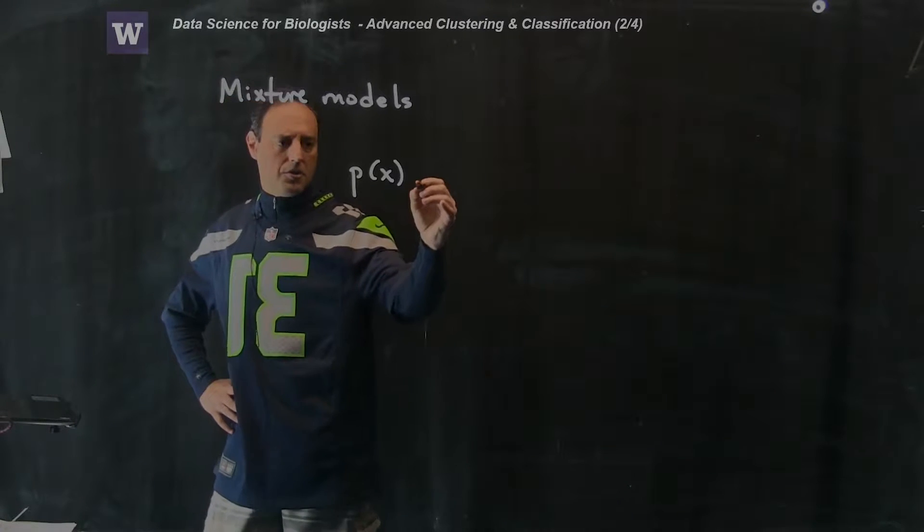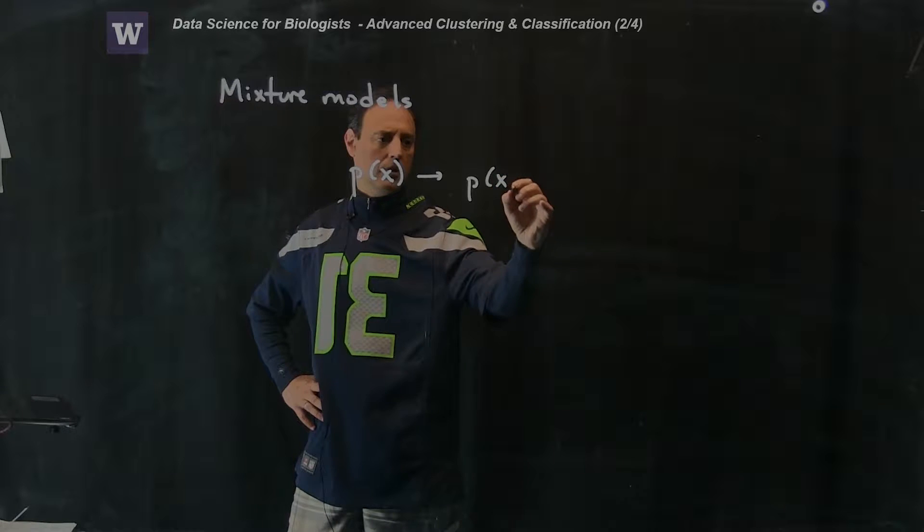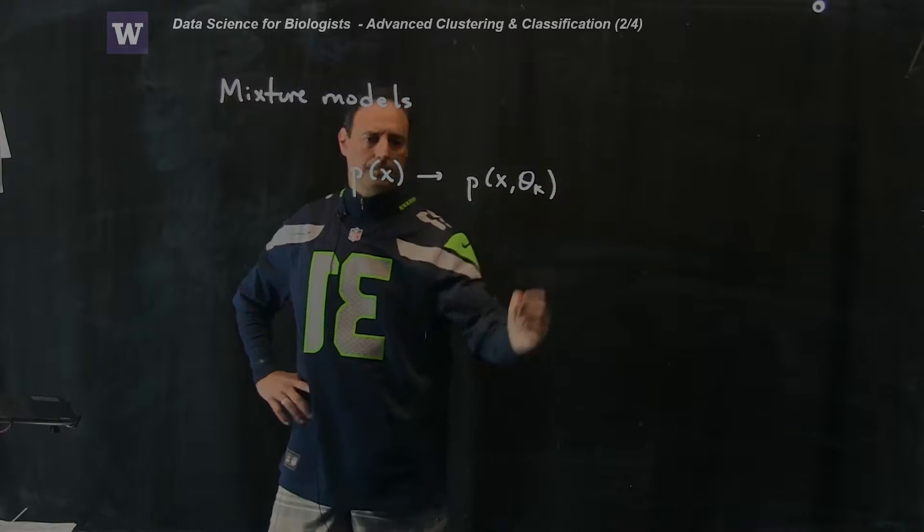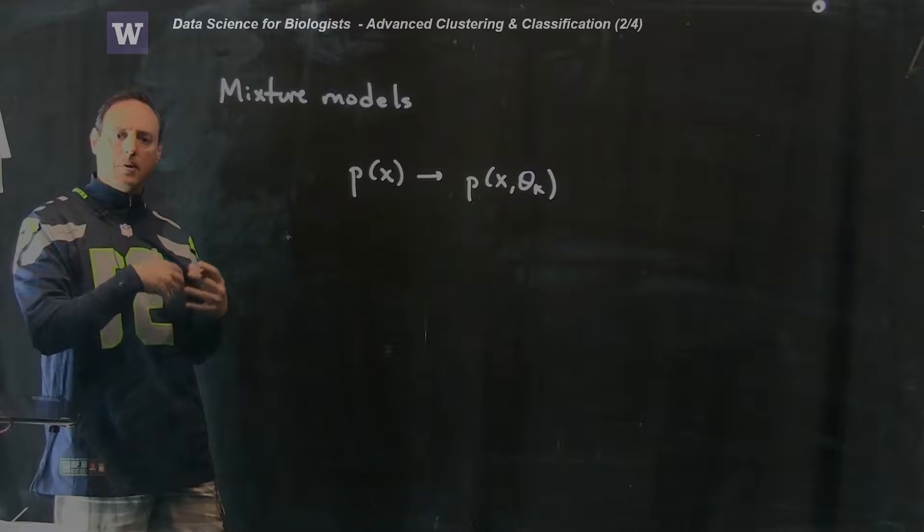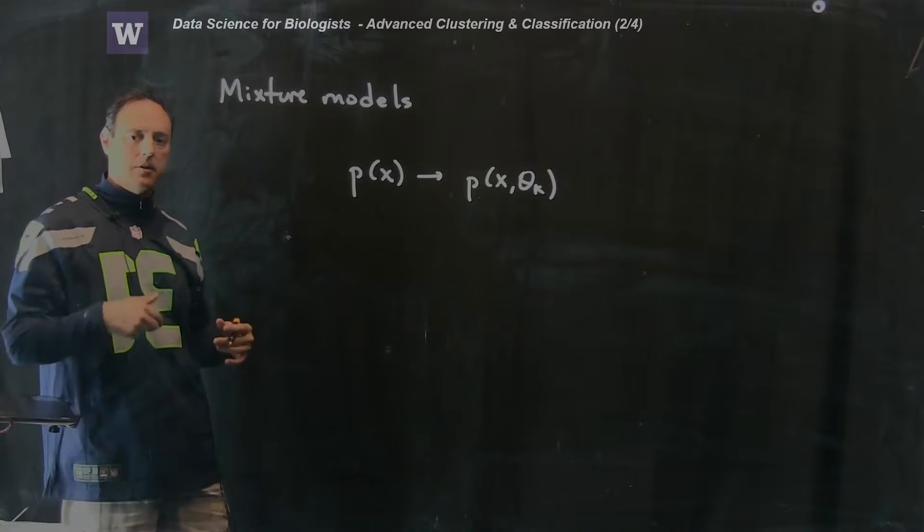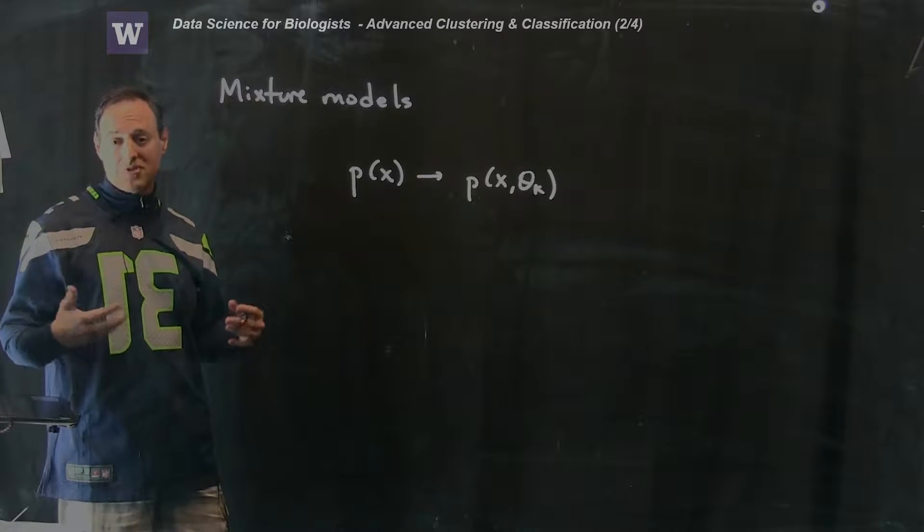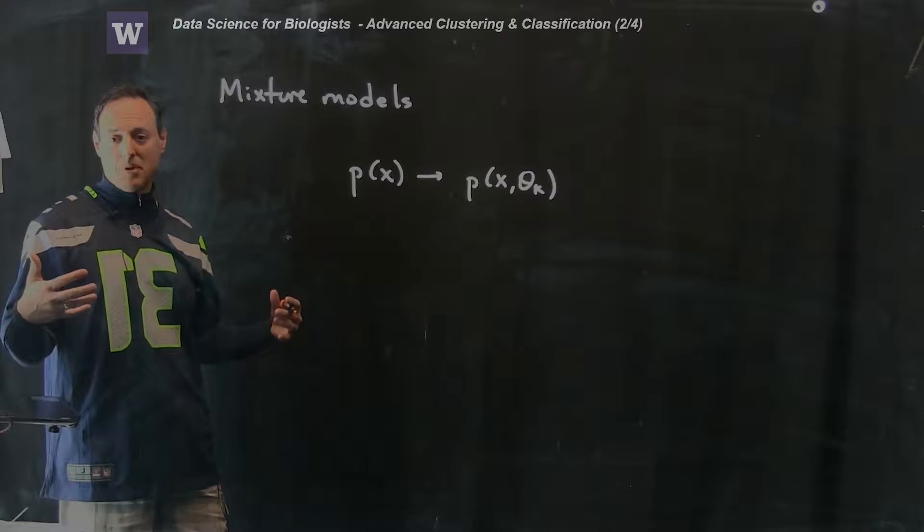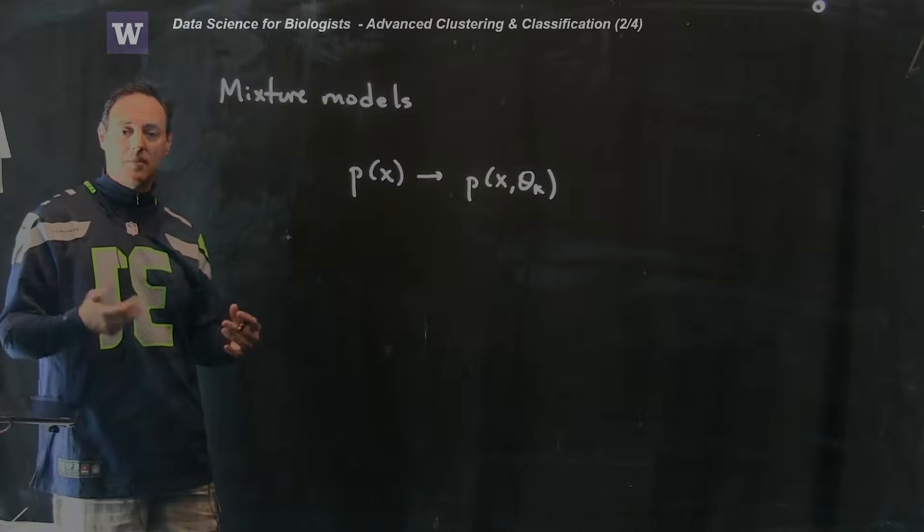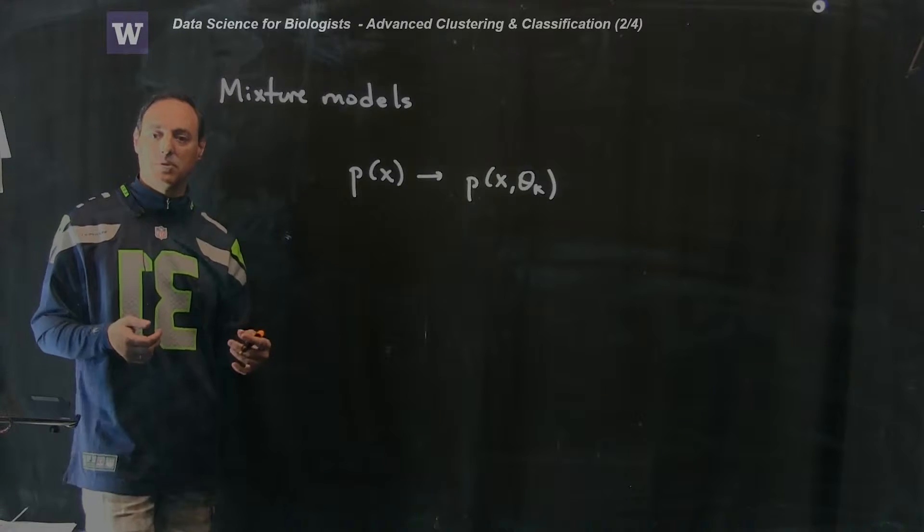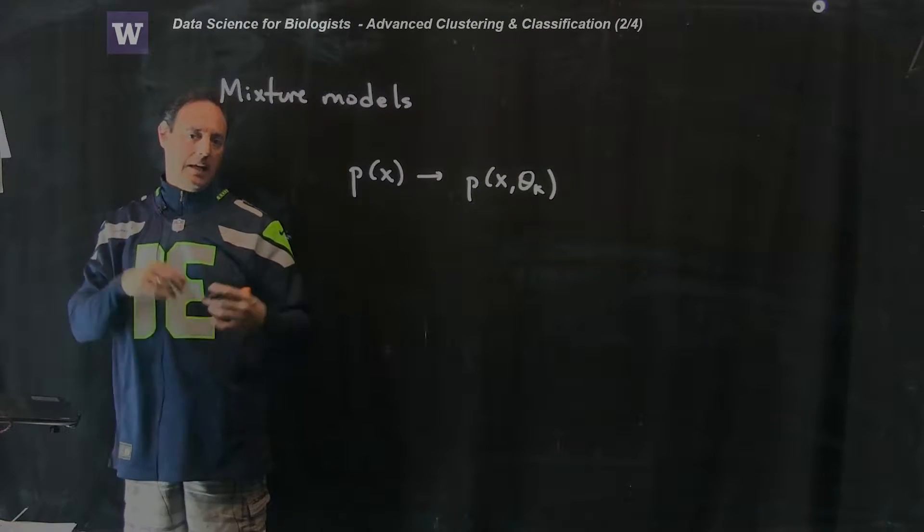Oftentimes, this distribution is parameterized by some parameters, let's say theta k. So in other words, the theta k might have things like, okay, I want to parameterize the mean, the variance, things of this issue. In fact, one of the most standard distributions people assume, if there's nothing better to give you a better guess, is to do Gaussian distributions. And Gaussian distributions are completely characterized by some mean and some variance.